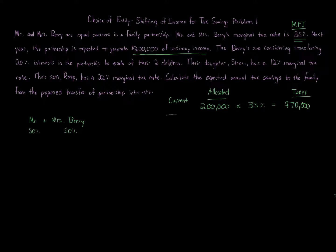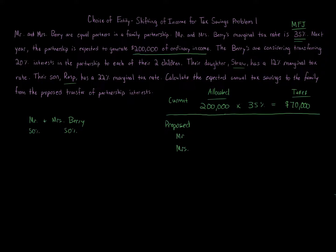They're considering a change that can potentially save them taxes. The proposed structure also likely serves non-tax purposes — they might be getting older or retiring and want to transfer wealth as part of succession planning. They have two children, Straw and Rasp, and they're proposing to transfer 20% ownership to each child.